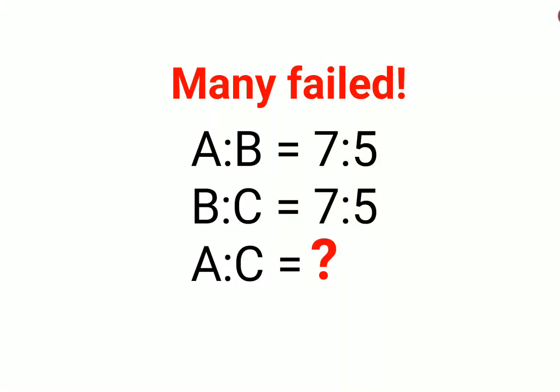Welcome everyone. So today we are going to understand a ratio problem. We have A is to B equals to 7 is to 5. B is to C is also equals to 7 is to 5. Then what is A is to C?